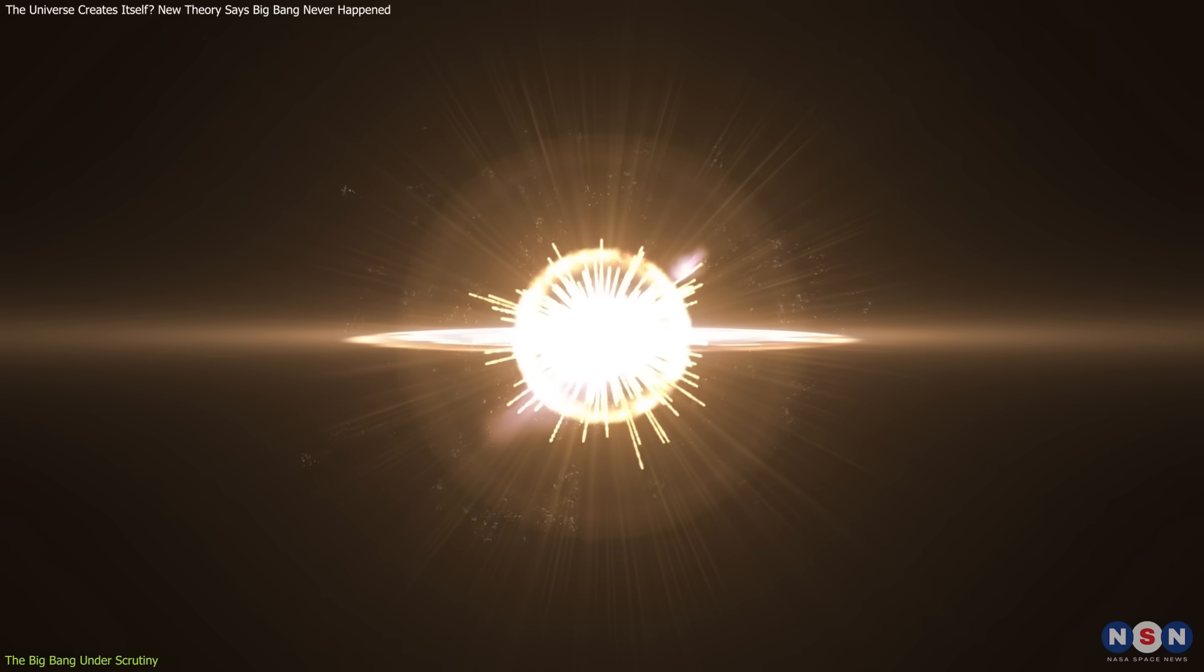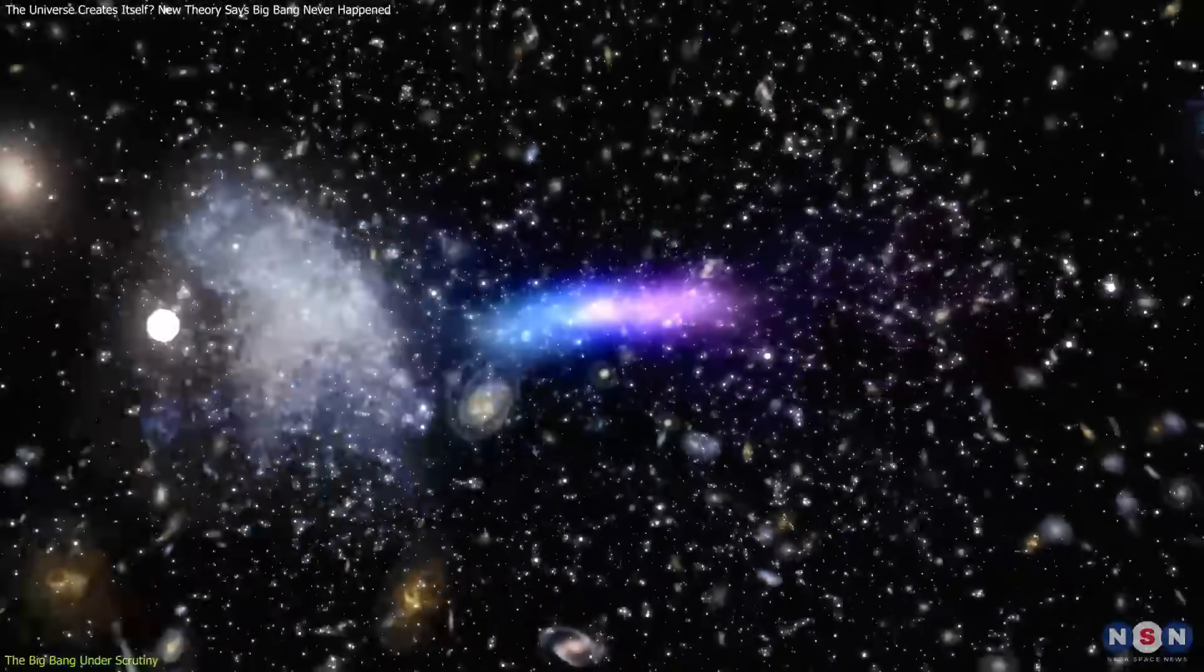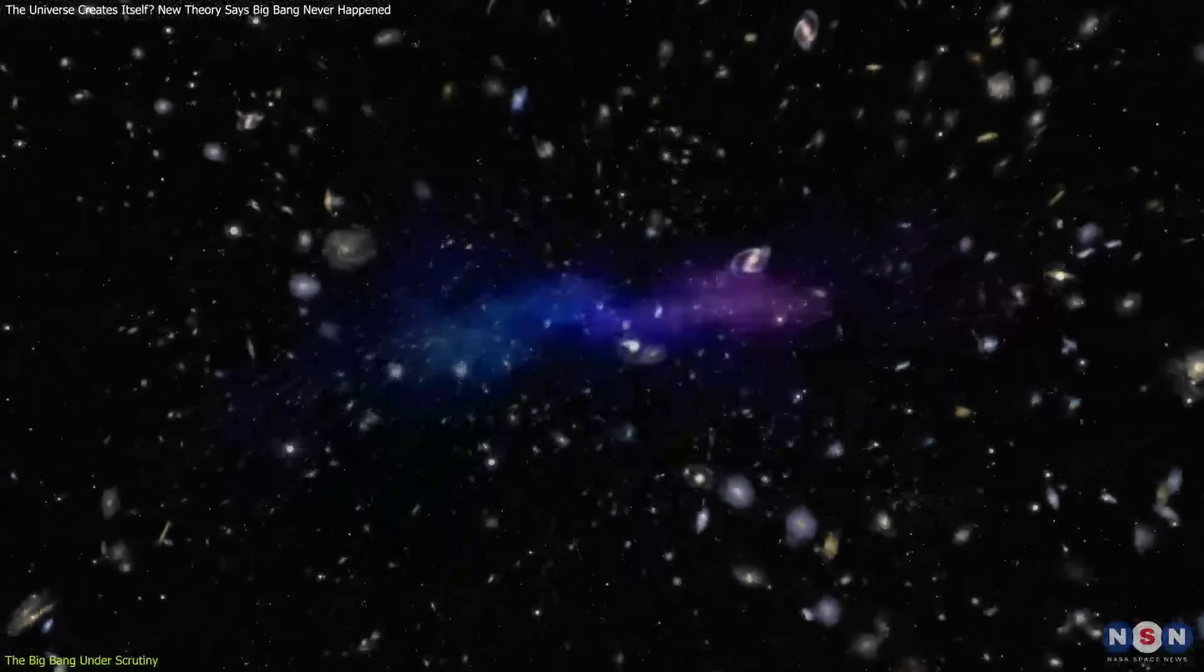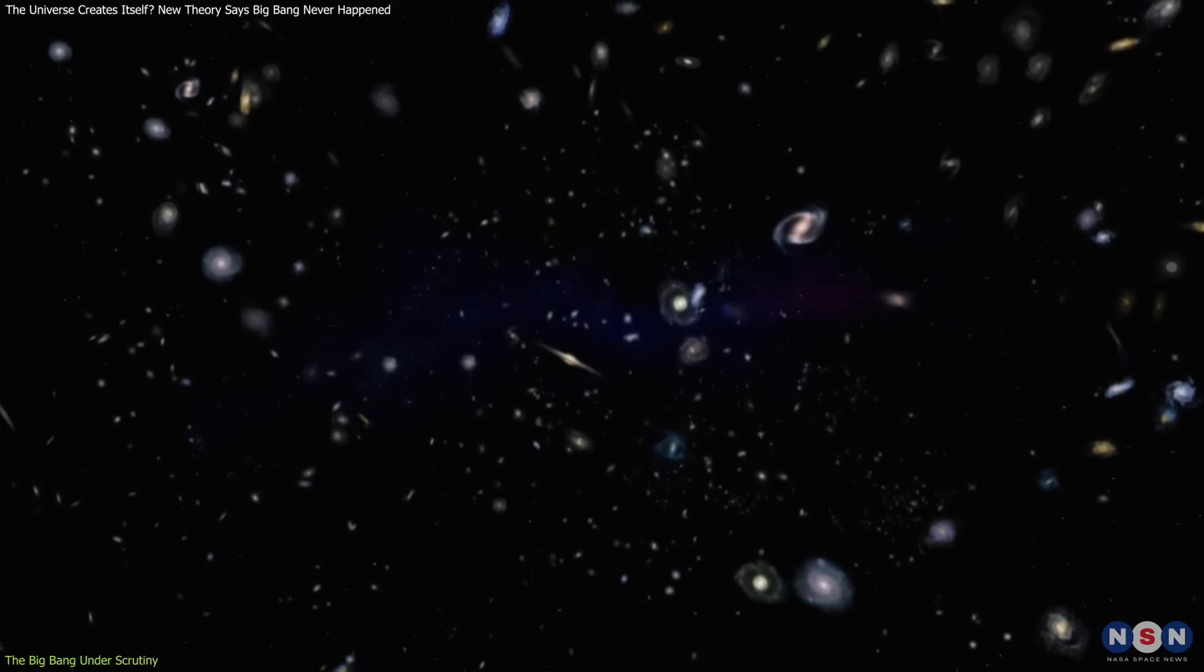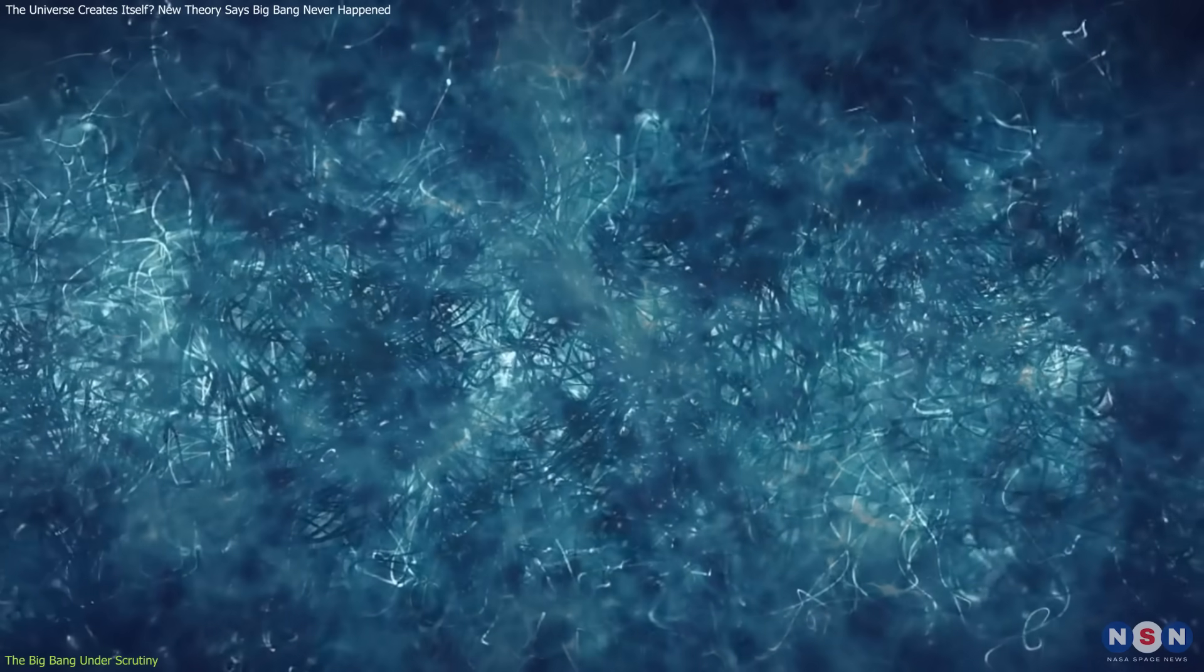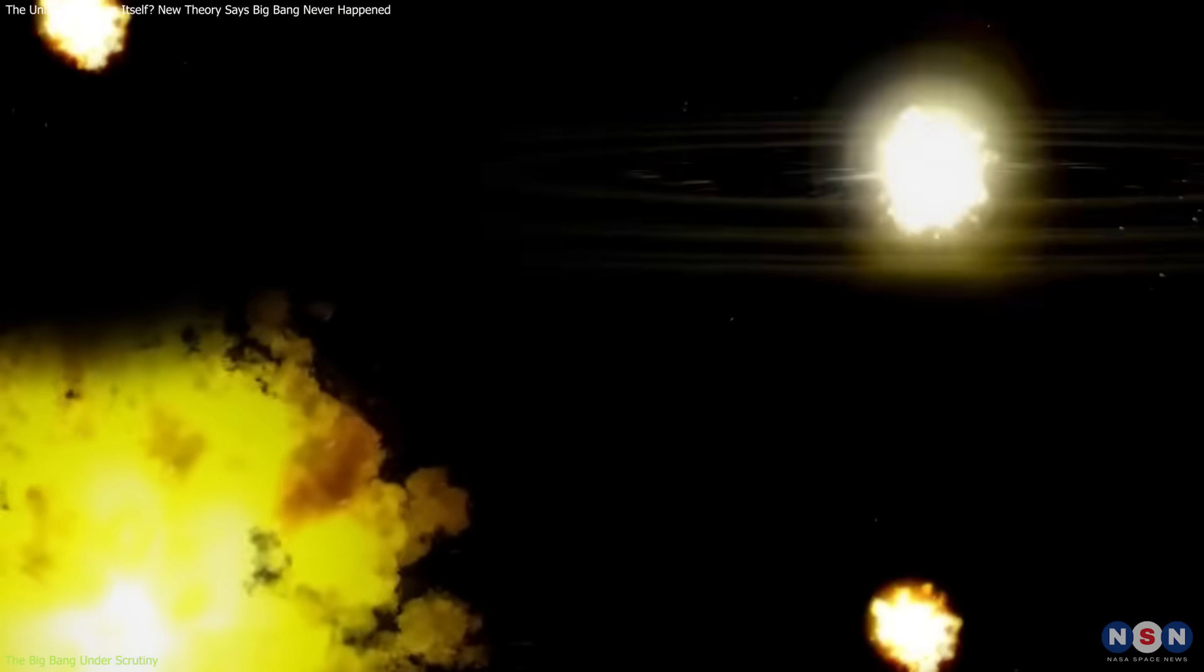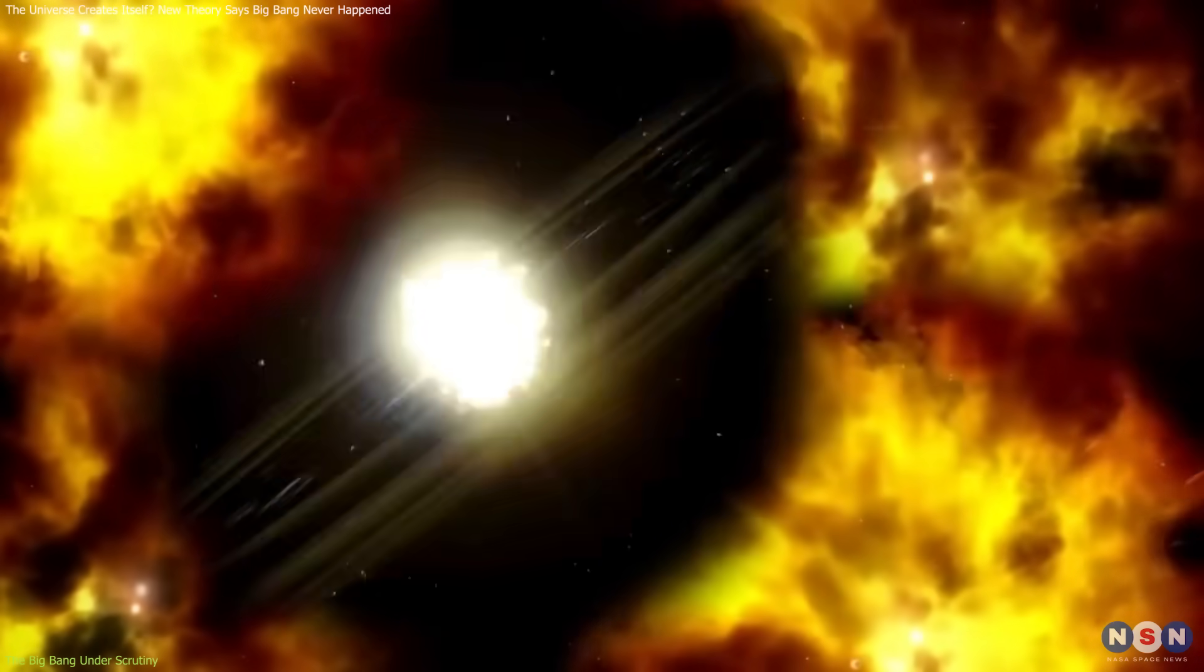When a burst occurs, it produces matter and injects energy into spacetime, creating localized gravitational distortions and expansion episodes. Once the burst ends, those effects dissipate. In this view, dark matter and dark energy are not constant features of the cosmos, but fleeting phenomena tied to specific creation events.